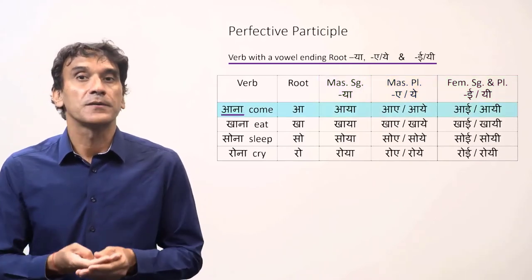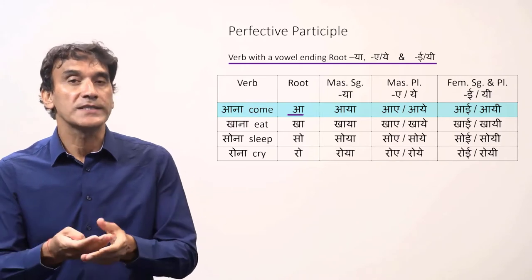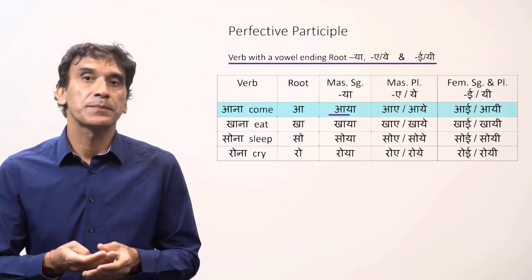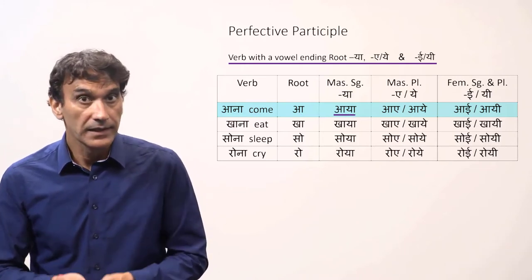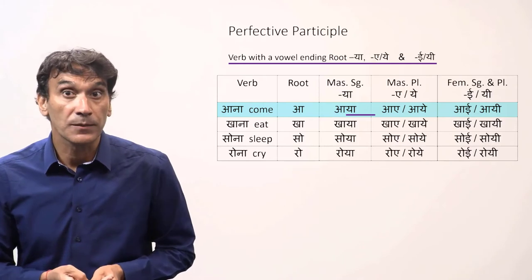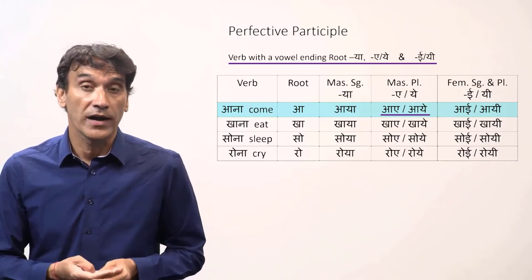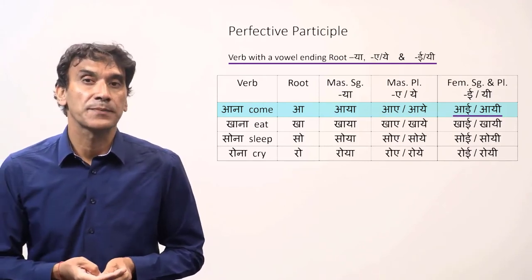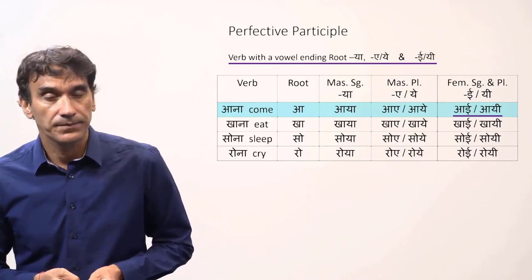The first verb is ana, to come. The root is 'a'. The masculine singular participle is aya. The masculine plural participle is either aye or aye. And the feminine singular and plural participle are ai or ai.